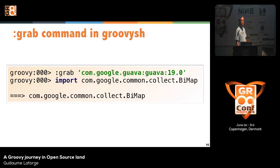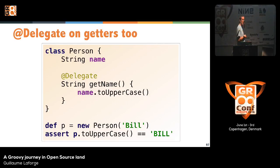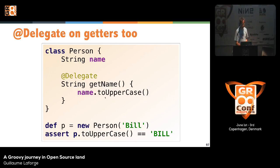A little enhancement to the Groovy shell: before you couldn't use @Grab inside the Groovy shell. Now there's a dedicated command called grab, so you can grab a particular dependency in your Groovy shell session. Also, @Delegate could previously only be applied to properties or fields, but now @Delegate can be used on getters as well. So for example, toUpperCase becomes available because there's an @Delegate on a string property.